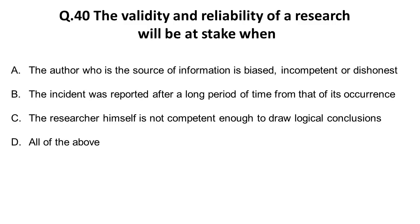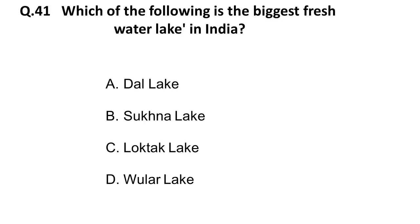The next question: the validity and reliability of research will be at stake when — option A is the author whose source of information is biased, incompetent, or dishonest (correct, as bias makes findings untrustworthy), option B is the incident was reported after a long period from its occurrence (correct, as poor documentation leads to poor results), option C is the researcher himself is not competent enough to draw logical conclusions (also correct). The correct answer is all of the above.